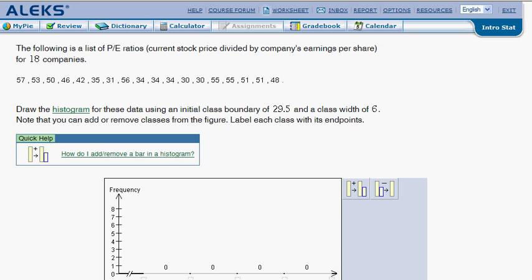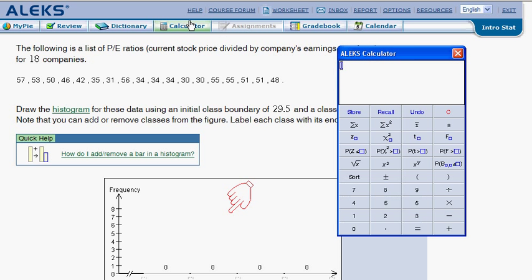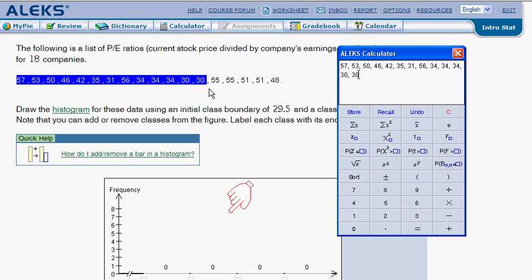Go up here and grab your Alex calculator. Now on your first number click and then drag all of those numbers into the calculator and click this button right here, sort. This will immediately take all of our numbers and sort them from small to large.